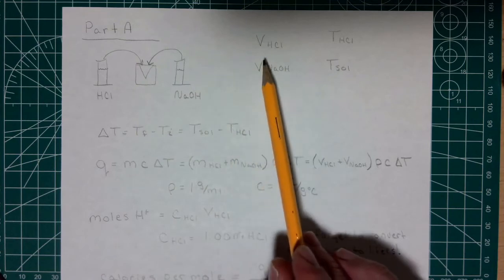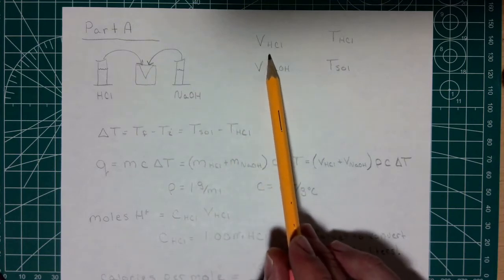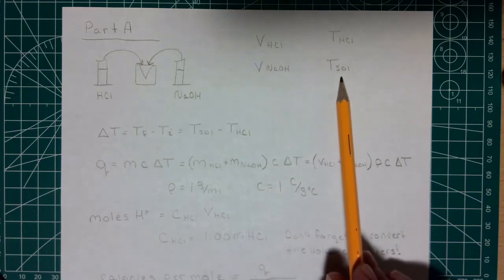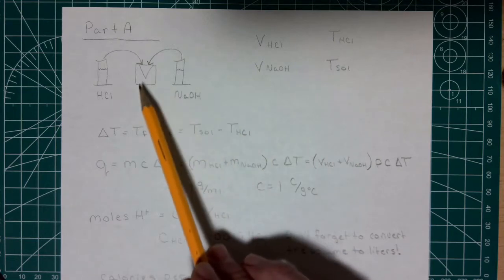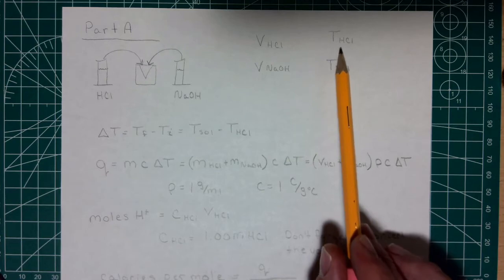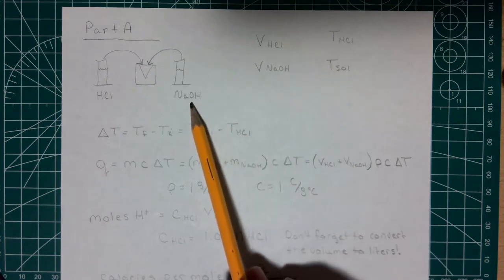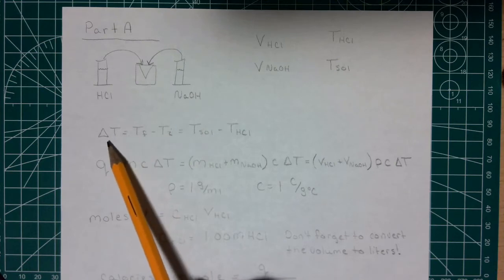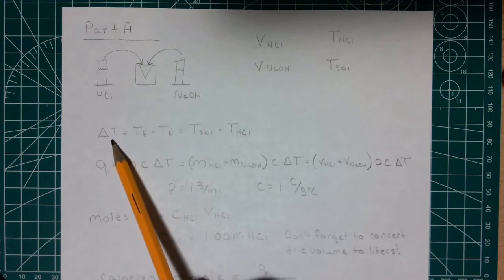We're given the volume of the hydrochloric acid, the volume of the sodium hydroxide, the final temperature of the solution when it's all mixed together, and the initial temperature of the HCl. We're going to make the assumption that the initial temperature of the HCl is also the same as the initial temperature of the sodium hydroxide — that's pretty reasonable if they were next to each other in the lab.